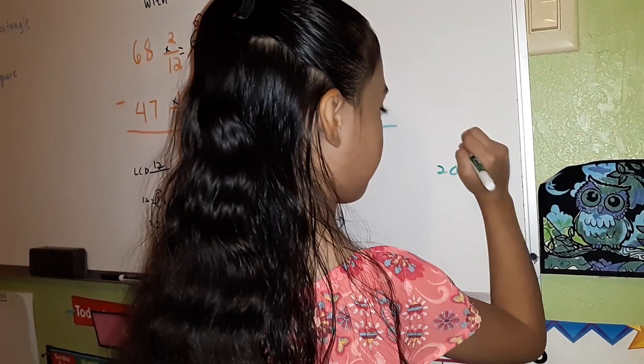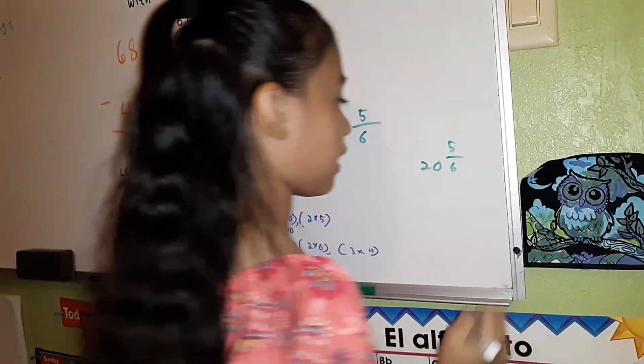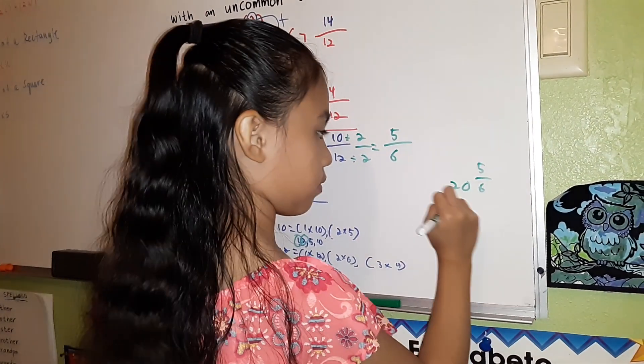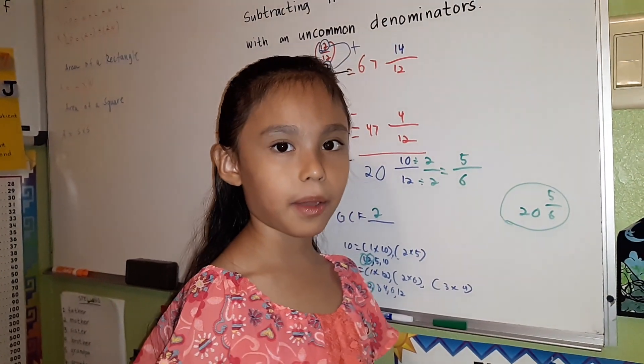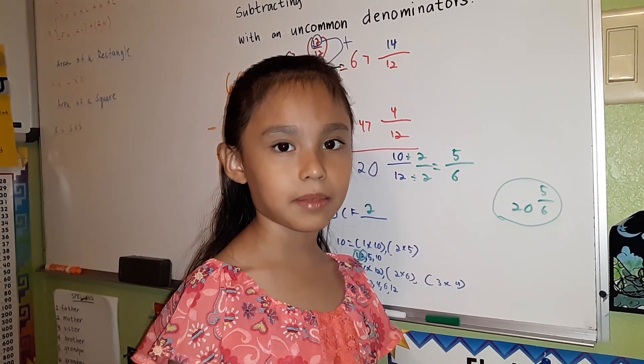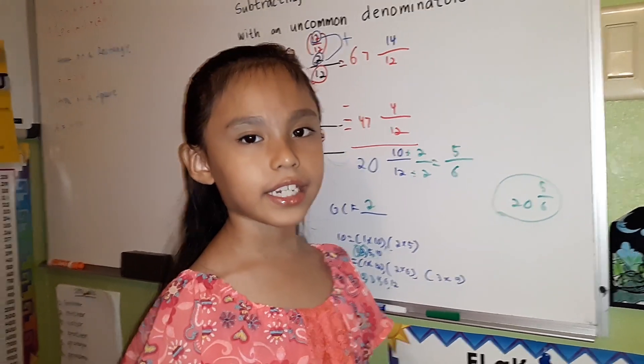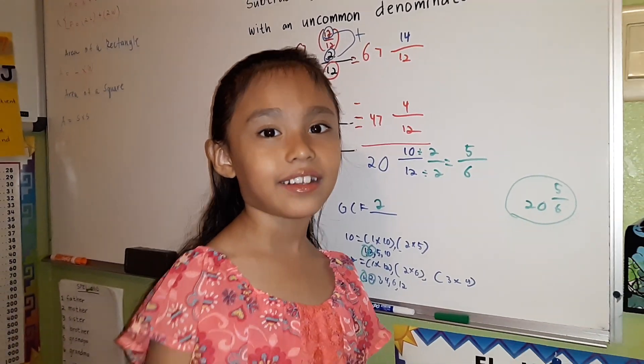20 and 5/6 is our final answer. And that's how you subtract fractions with borrowing with an uncommon denominator the easiest way. Thank you for watching. Subscribe to my channel. Bye.